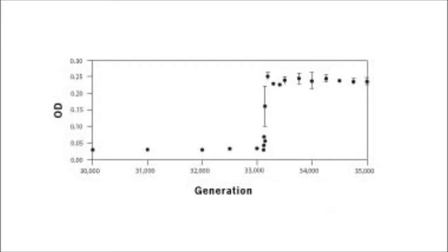Then, just after generation 33,100, the OD score of tribe Ara Minus Three, and of that tribe alone among the twelve, went into vertical take-off. It shot up six-fold to an OD value of about 0.25.